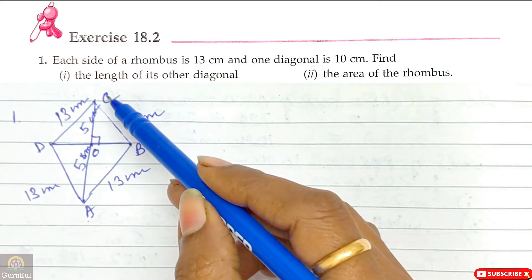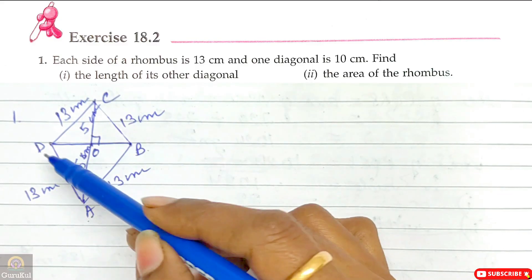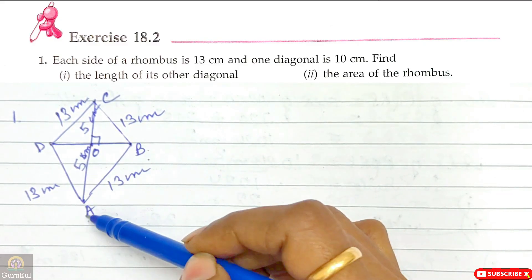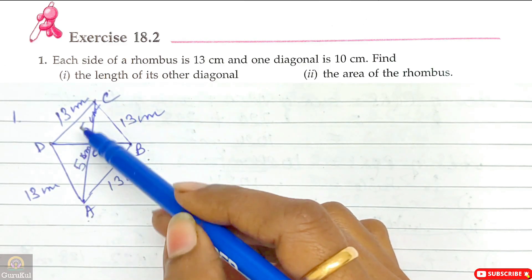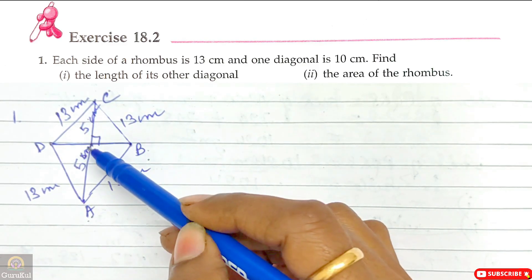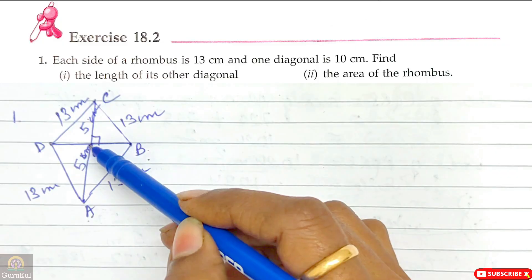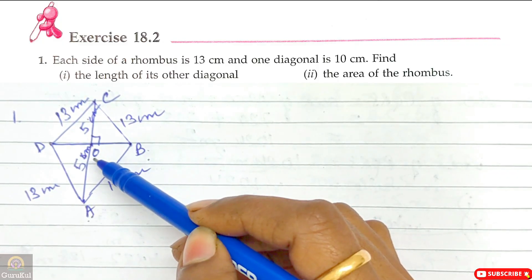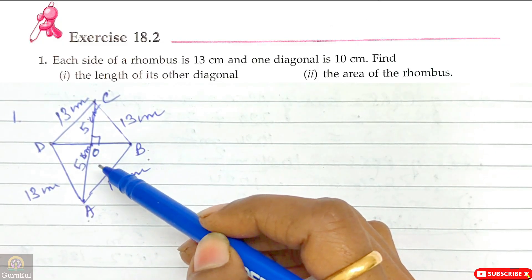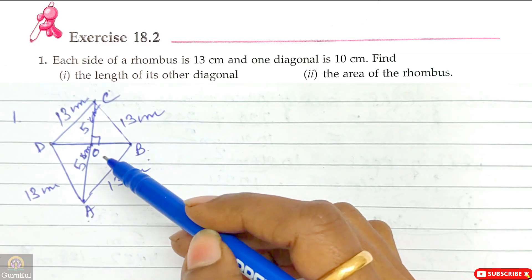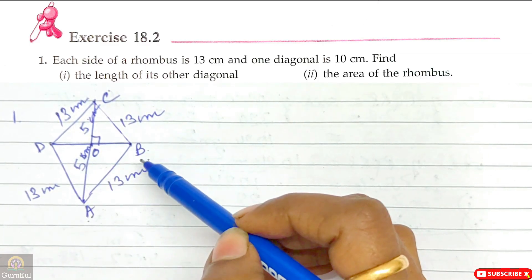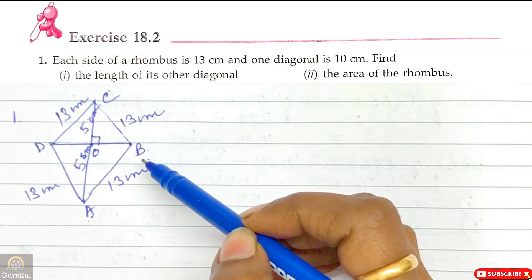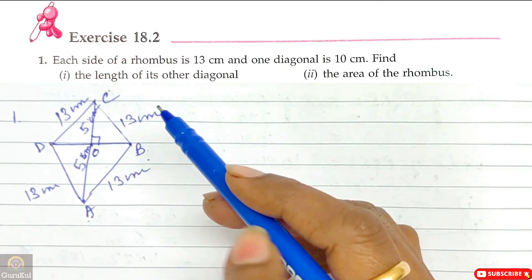A, C is one diagonal and B, D is the other diagonal. The measurement of A, C is given as 10 cm, so each half is 5 cm. The meeting point of the diagonals is point O. We need to find the length of the other diagonal B, D as well as the area of the rhombus.